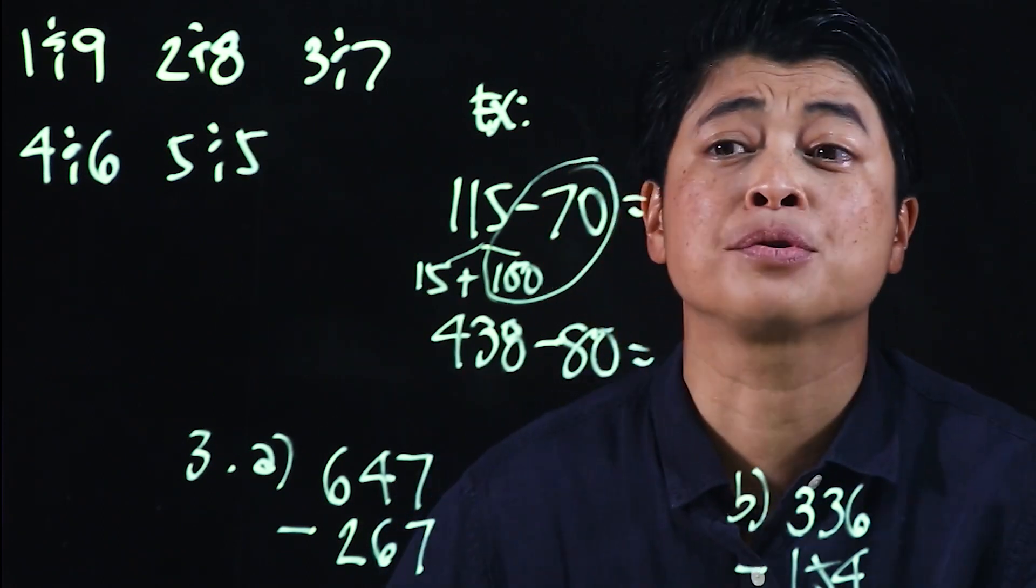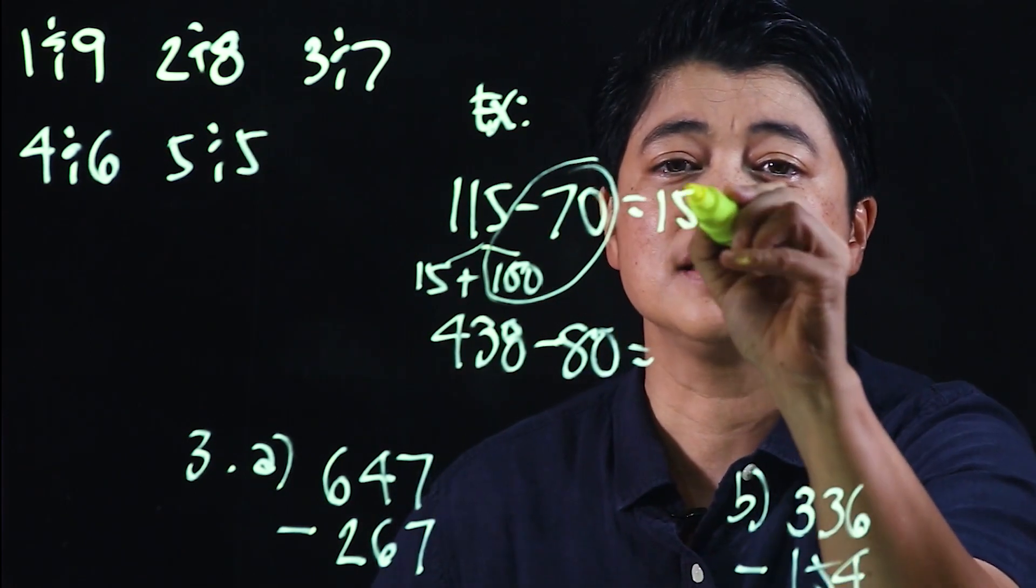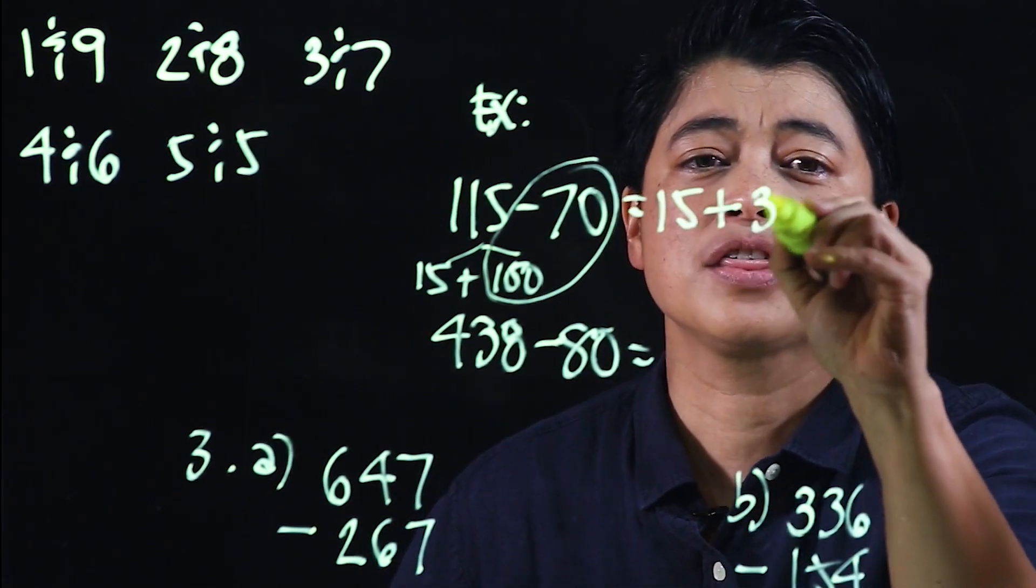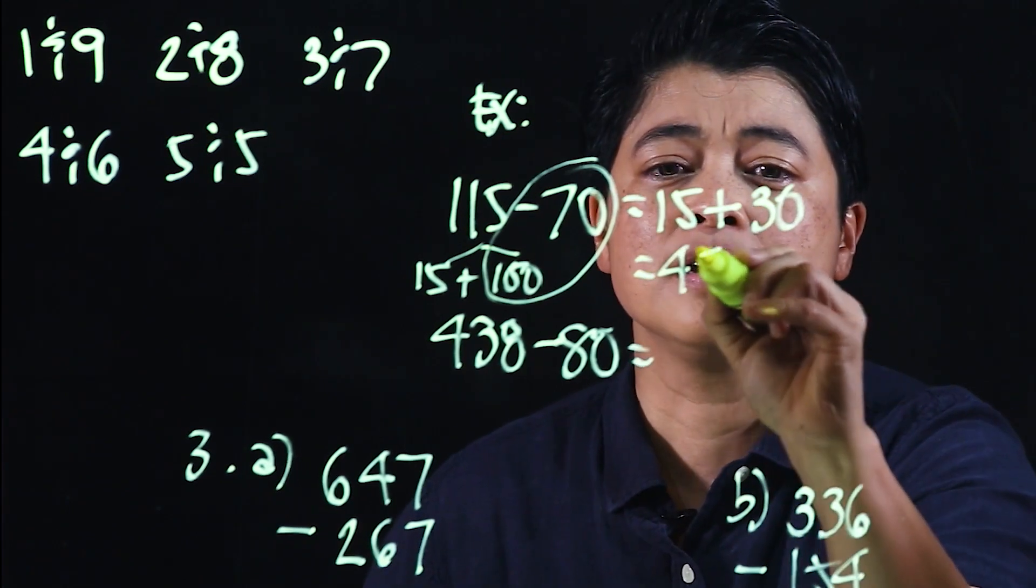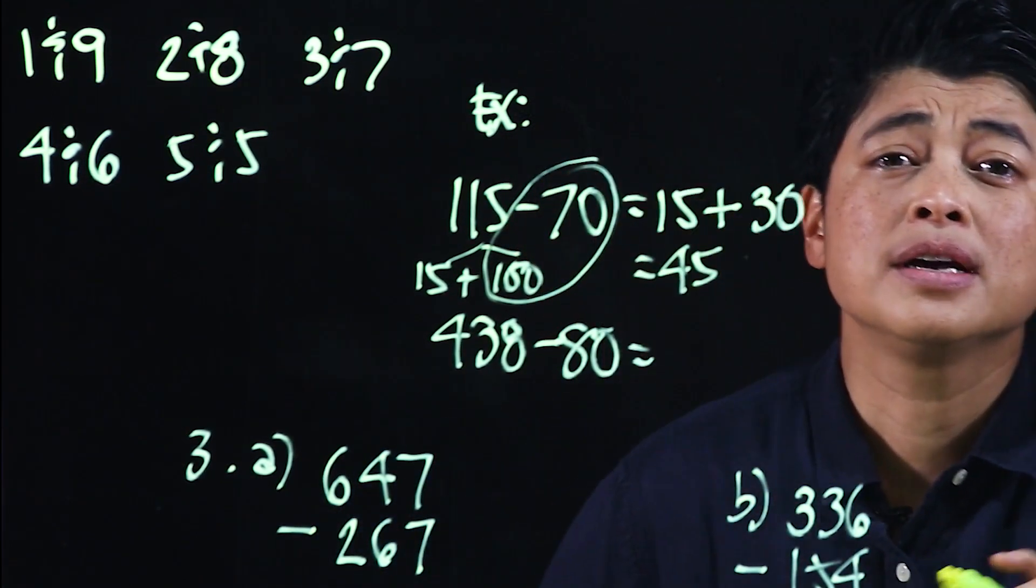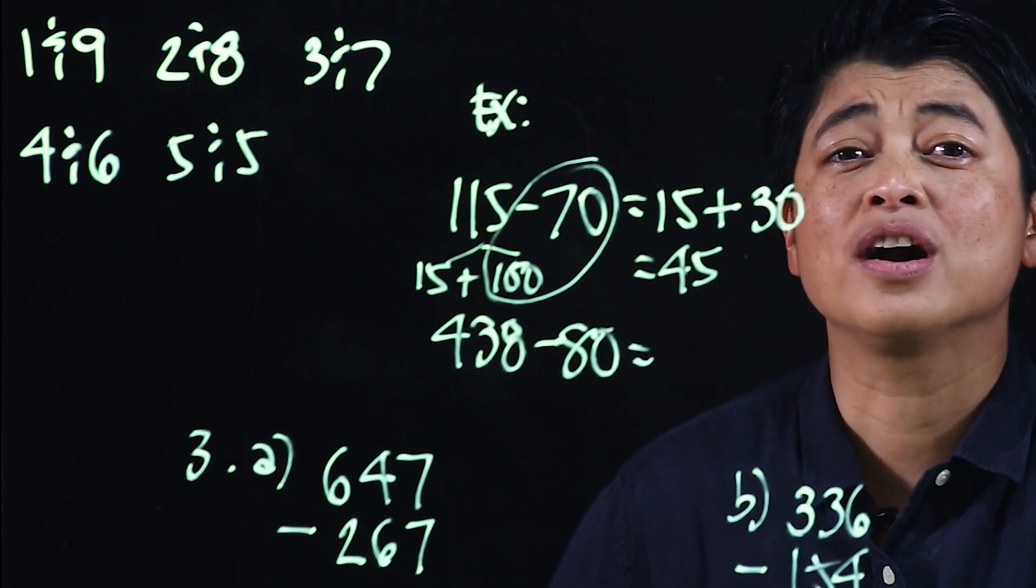Which means this is 15 plus 30, which makes it 45. So this is a strategy for mental subtraction.